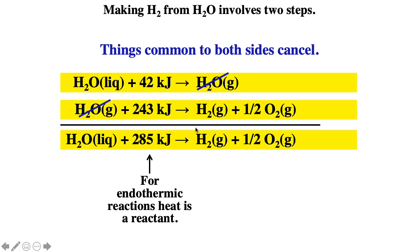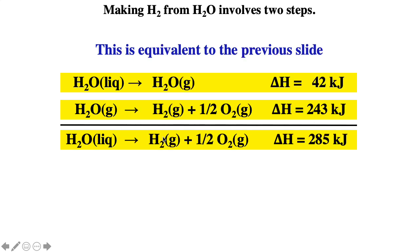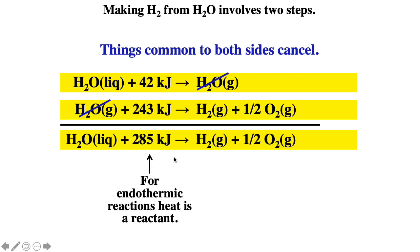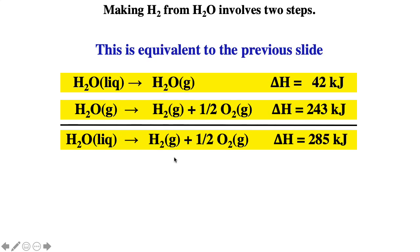We can write the heat explicitly as a reactant, or we can write it in terms of delta H — these are exactly equivalent. Delta H equals Q at constant pressure assuming all expansion work, so Q is positive, meaning heat is going into the system. All of these are endothermic processes. If you add reactions, you have to add the corresponding delta H's.